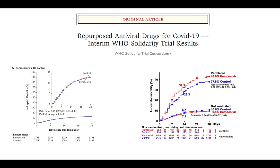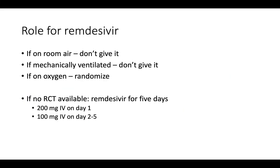For this reason, we're continuing to randomize patients — over 1,000 in Canada so far. What's the role for remdesivir? If patients are on room air, I'd recommend not giving it. If mechanically ventilated, I'd recommend not giving it. If on oxygen, we should be randomizing. If no trial is available at your center and the patient is on oxygen but not ventilated, it's reasonable to consider treating: 200 mg on day one, then 100 mg on days two through five. I don't think there's benefit to 10 days over five.